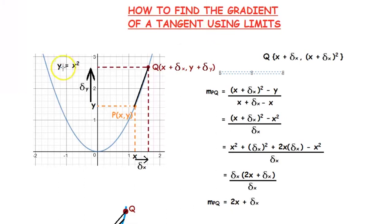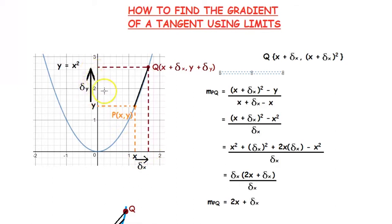Take this graph y equals x squared. We have a random point P on this curve. We will take a small increment from x called delta x, and let delta y be the increment of y corresponding to delta x.